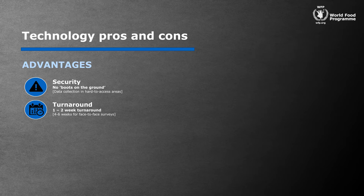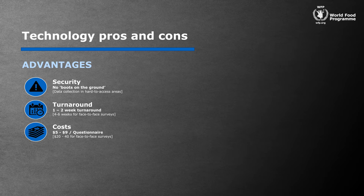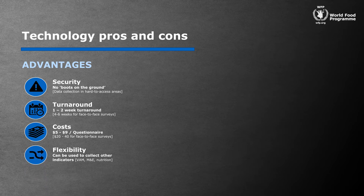Another advantage of mobile surveys is the lower cost involved. We know that face-to-face surveys cost anything between $20 to $40 per household for simple surveys. With mobile VAM, we're doing these light surveys at a cost of between $5 and $9. Of course, we can't entirely compare a phone survey to a face-to-face survey because a phone survey will produce more limited information, but it's still an important difference. Another asset of mobile surveys is the flexibility it offers. We've been able to use mobile surveys for different indicators, traditional indicators, and also for M&E indicators such as, did the food arrive on time, or were there any issues with accessing food, and so on.